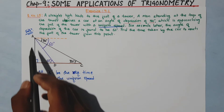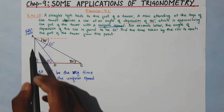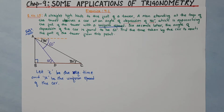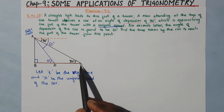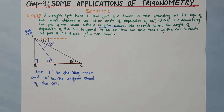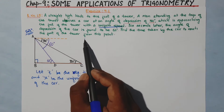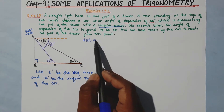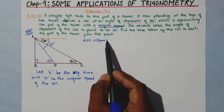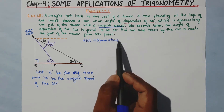We have two right triangles: right triangle ABC and right triangle ABD. AB is common in both triangles. We can use distance equals speed into time to find the distances. So the distance formula is: distance is equal to speed into time.